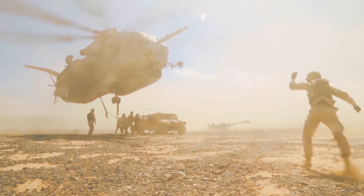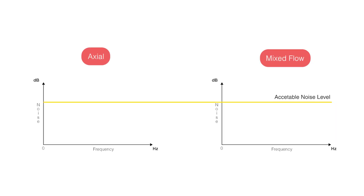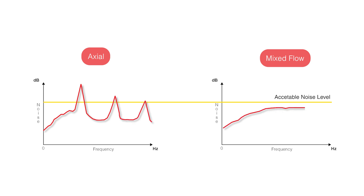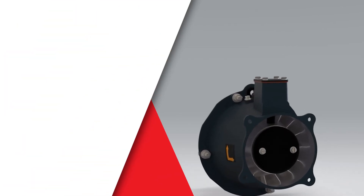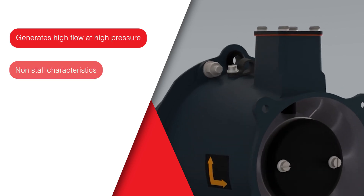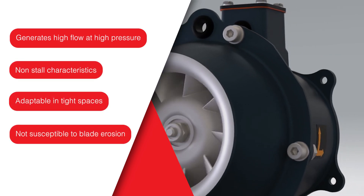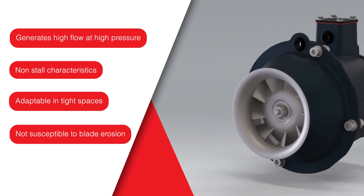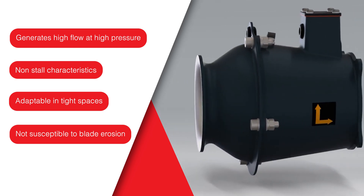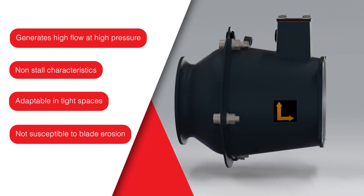Due to their aerodynamic characteristics and lower operating speed, mixed-flow fans are also quieter than axial flow fans, which generate high-pitched frequencies as their blades pass by a stationary guide vane. In summary, a mixed-flow fan can deal with high pressures and produces high flow rates needed for cooling. They are highly adaptable in tight spaces where a clear axial flow path is not achievable, and they are not susceptible to blade erosion, making them a great choice for engine cooling and sand scavenge applications.